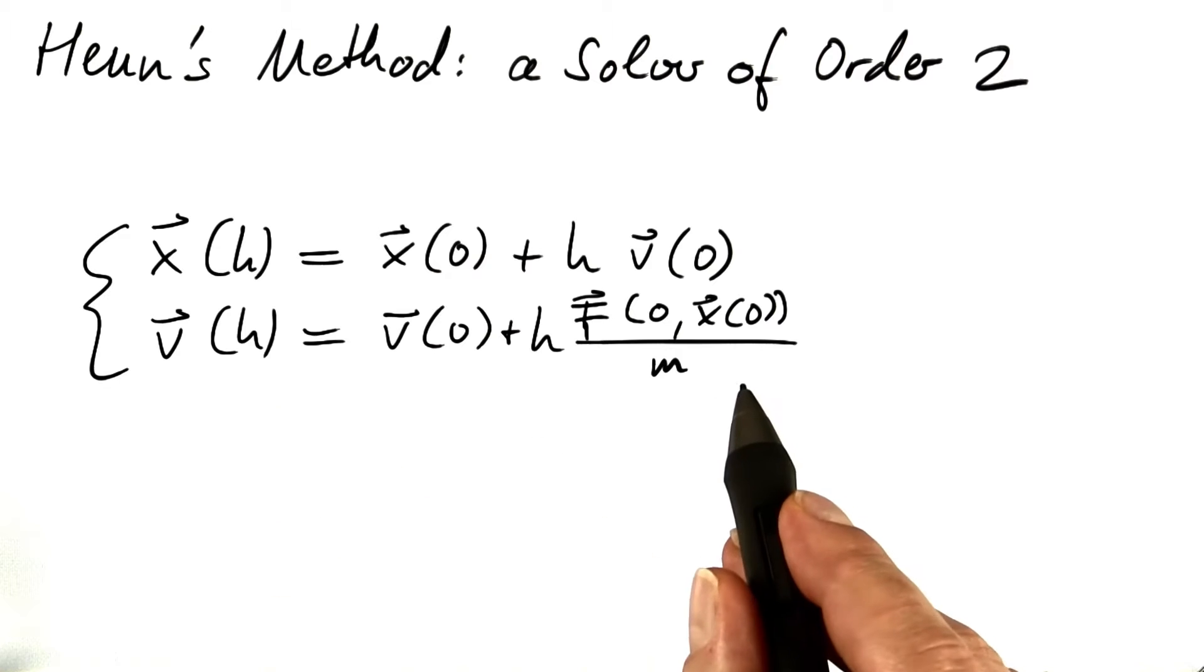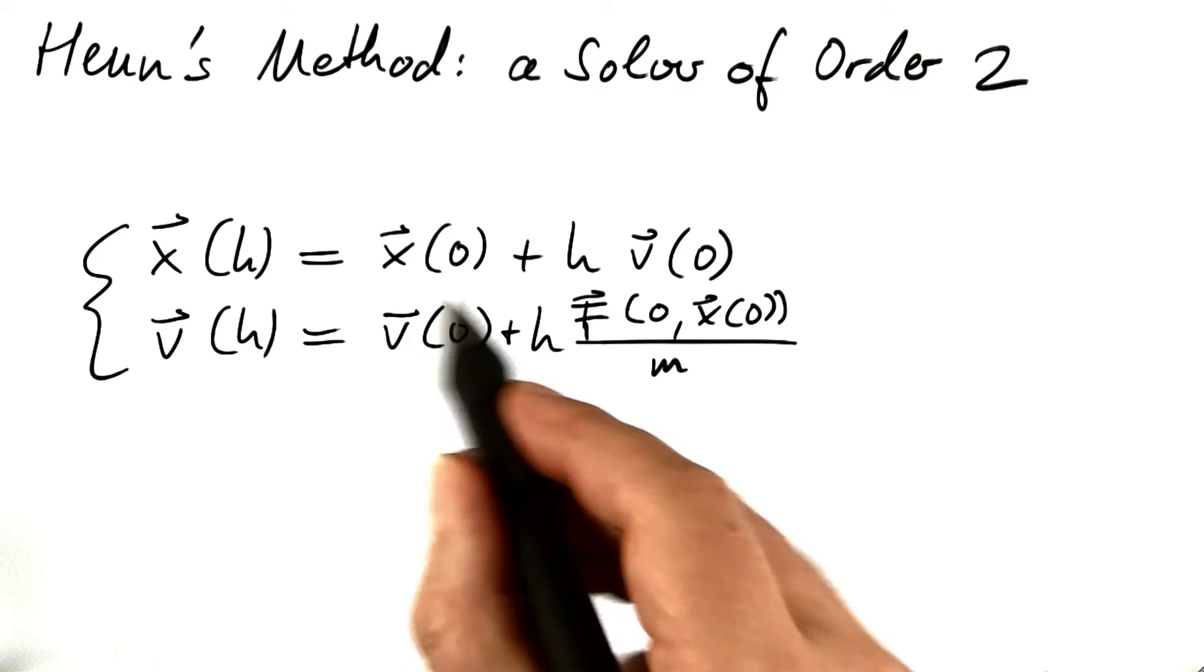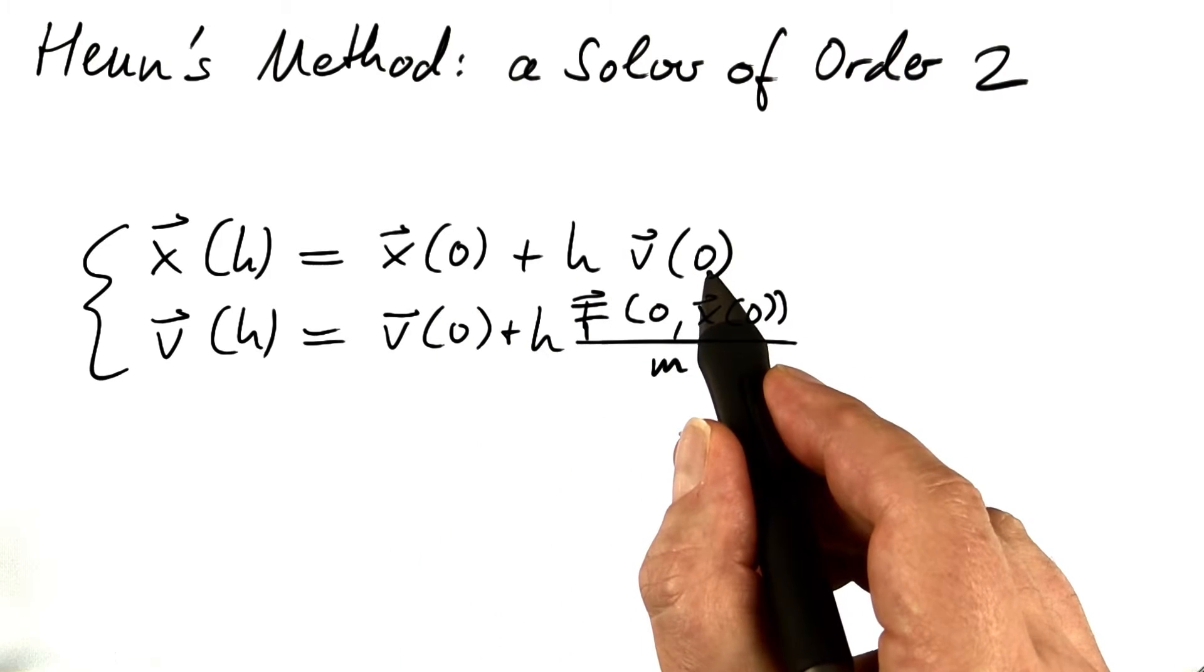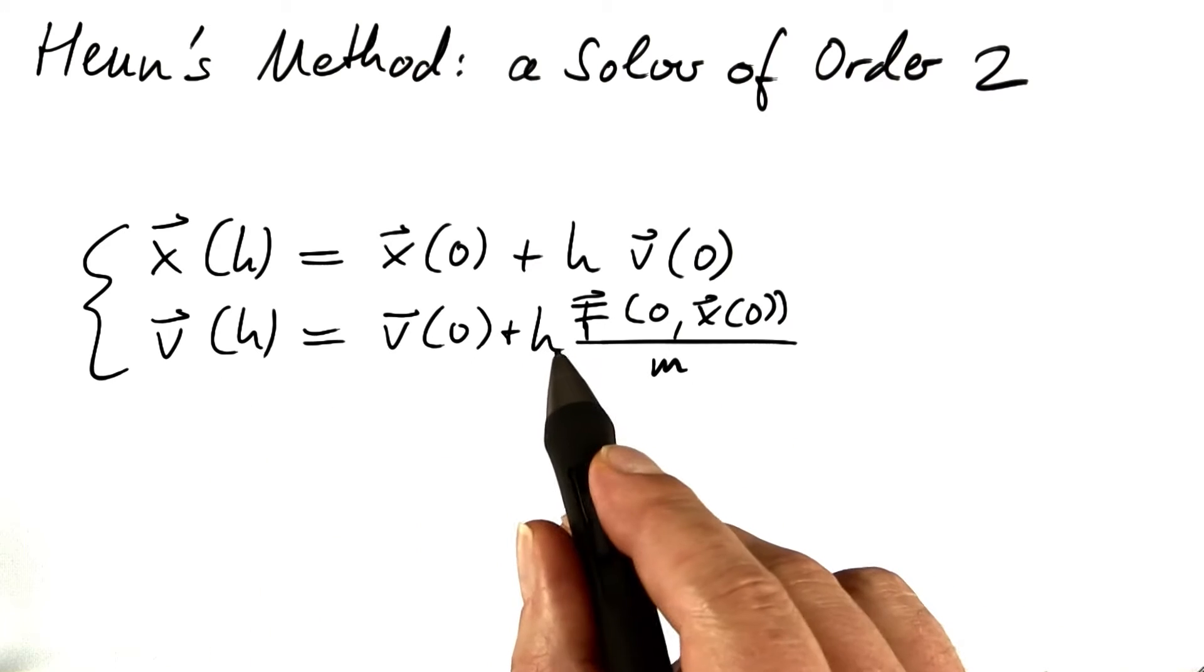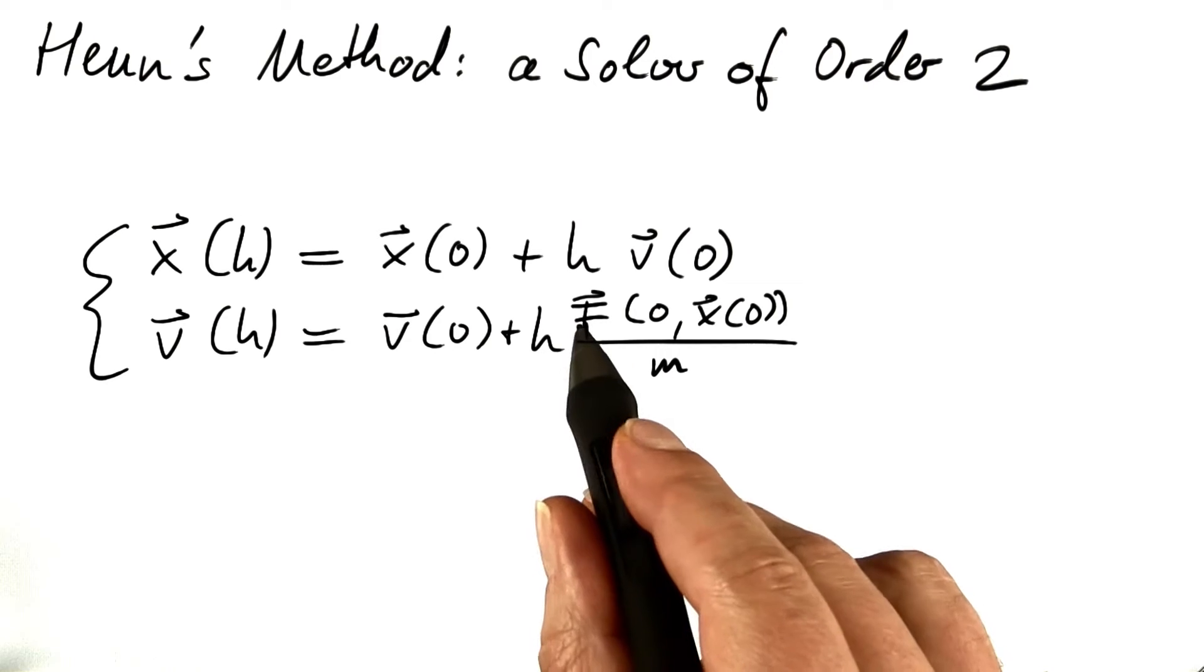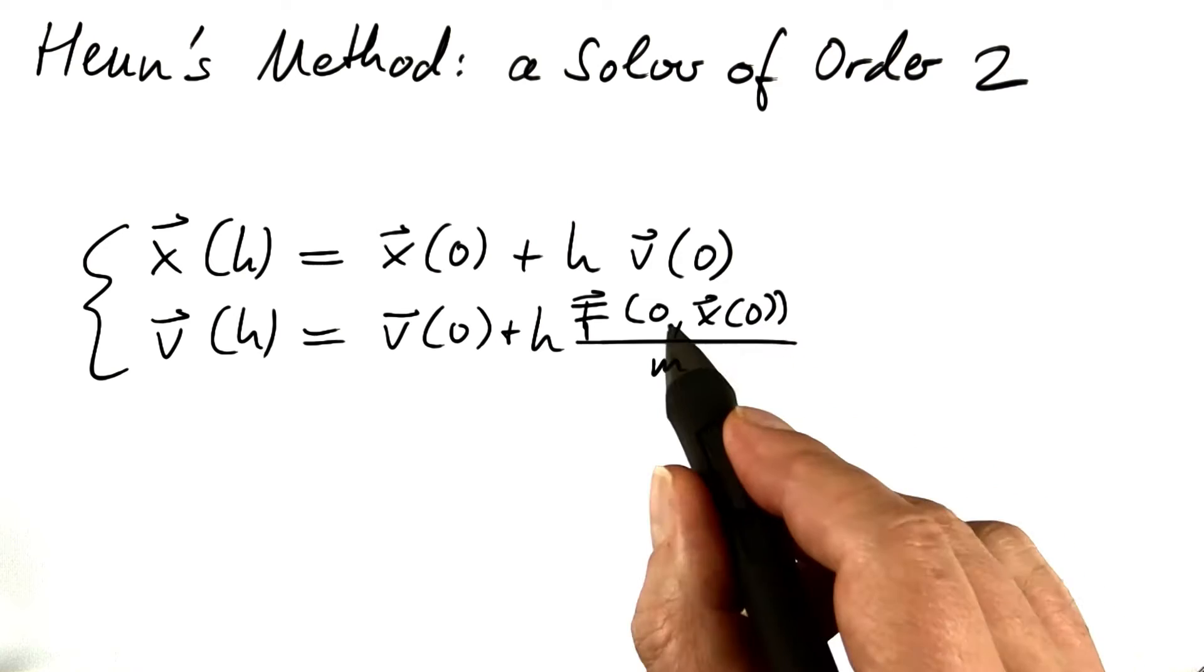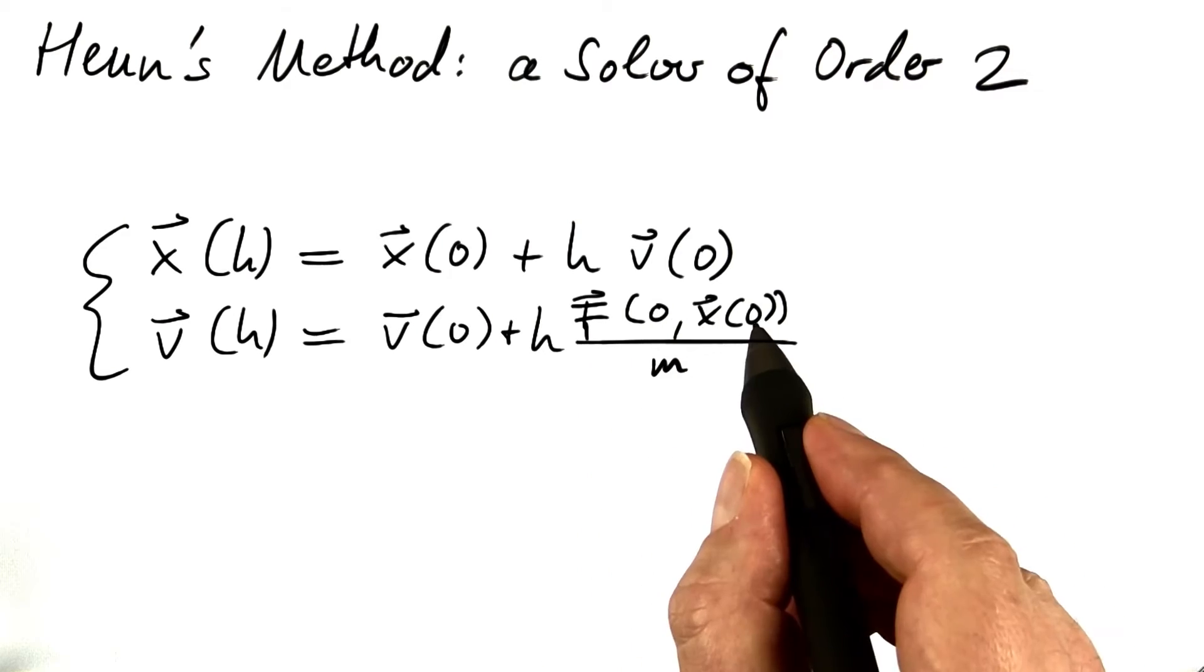I start with the forward Euler method. The position after the first time step is the initial position plus time step times the initial velocity. And similarly for the velocity, the velocity is changed by time step times force divided by mass. Force divided by mass is acceleration. I have explicitly indicated the dependence of the force on time and position.